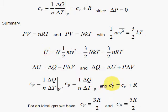And here's the result for the specific heats. The specific heat at constant pressure is equal to the specific heat at constant volume plus R. And for an ideal gas, the specific heat at constant volume is 3R over 2, and for the constant pressure, 5R over 2. This formula is more general.